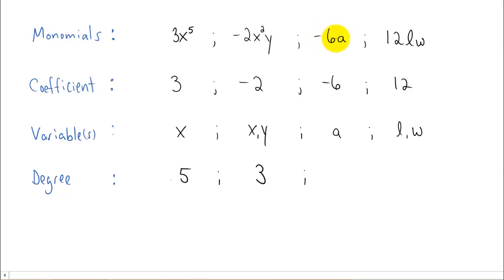What is the degree on negative 6a? Well, a is raised to the first power. Again, we don't write it, but it's there. So the degree is 1. And how about the degree of our last monomial? L has a power of 1 on it, and w has a power of 1 on it. You add those two together, and the term has a degree of 2.